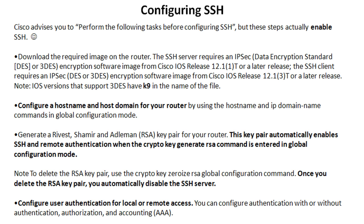Since generating the RSA key enables SSH, it logically follows that deleting the RSA key will disable the SSH server. Keep that in mind for exam questions, because that command actually enables and disables the SSH server. The last step is to configure user authentication for local or remote access — you'll need to use AAA with a RADIUS or TACACS server, or use a local username database. What you won't be able to do — unlike with Telnet — is simply set up a VTY line password. You need a username and password combination with SSH.